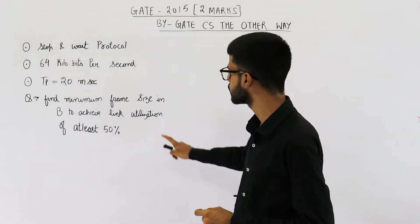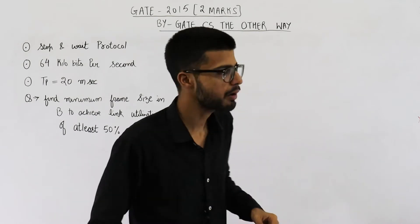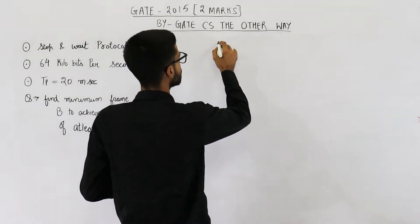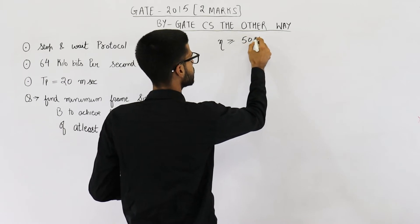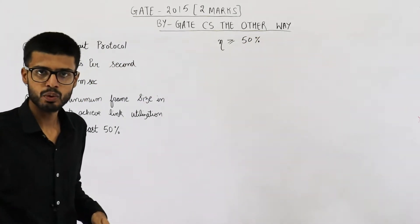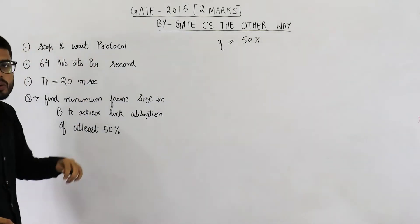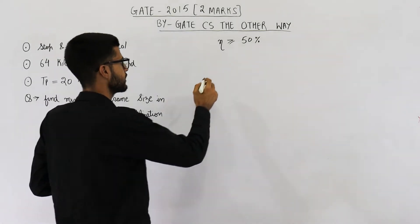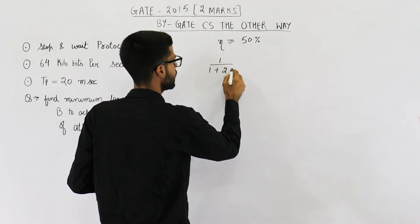Link utilization means efficiency. So we want the efficiency to be minimum 50%. Efficiency is greater than or equal to 50%. Efficiency in case of stop and wait is 1 upon 1 plus 2a. They are saying stop and wait protocol is used. So efficiency will be 1 divided by 1 plus 2a.